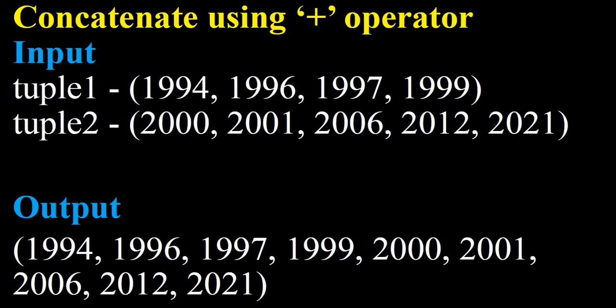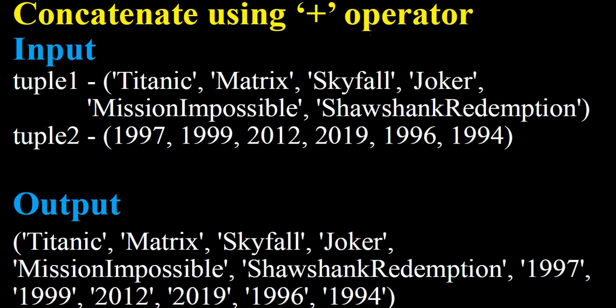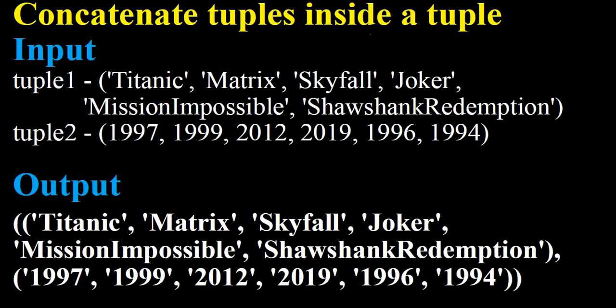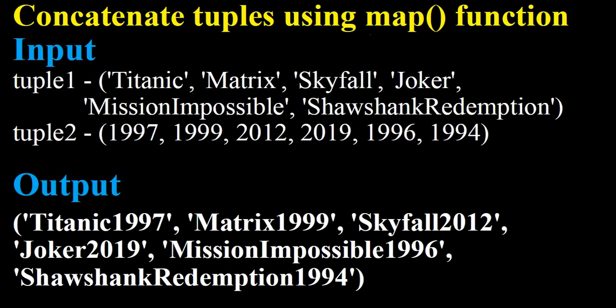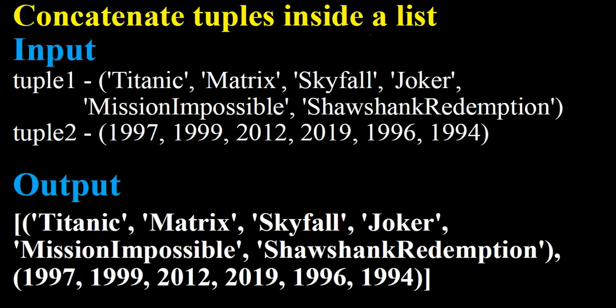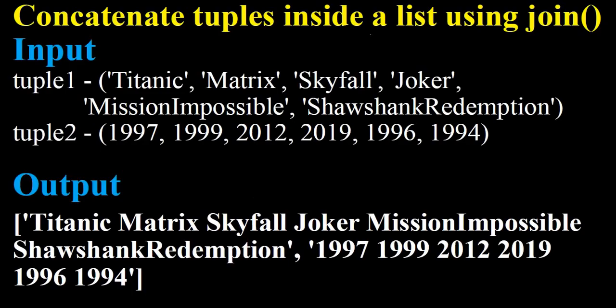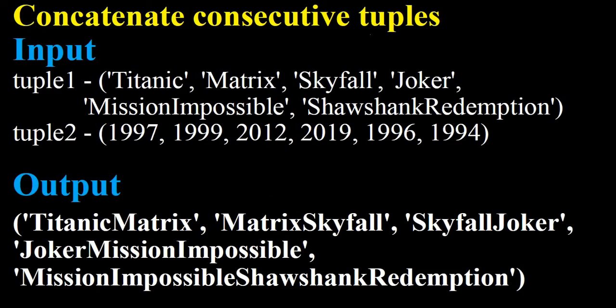In this session we covered: concatenating using the plus operator for numeric tuples and also string with numeric tuples, concatenating using the sum function, concatenating tuples inside a sub-tuple, using the map function, the zip function, concatenating tuples inside a list, concatenating tuples inside a list using the join function, and finally concatenating consecutive tuples. Thanks for watching — if you found this helpful, please press the like button, subscribe to this channel, and refer my videos to your friends. See you in my next video on tuple indexing.